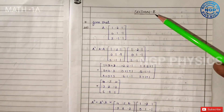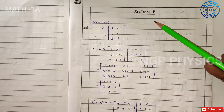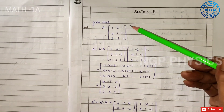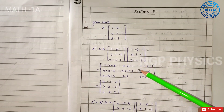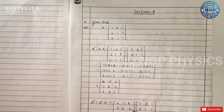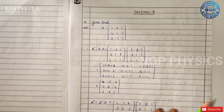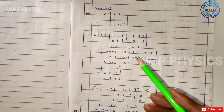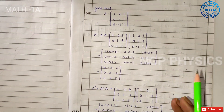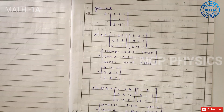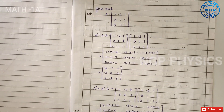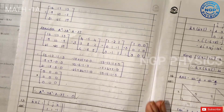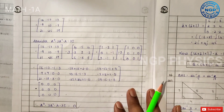Next, Section B — SAQs. In this section there are 7 questions and you must answer 5. Each question carries 4 marks. The first SAQ is on matrices. Keep your letters and steps very clean. You can use this box in the 24-page booklet for your working.